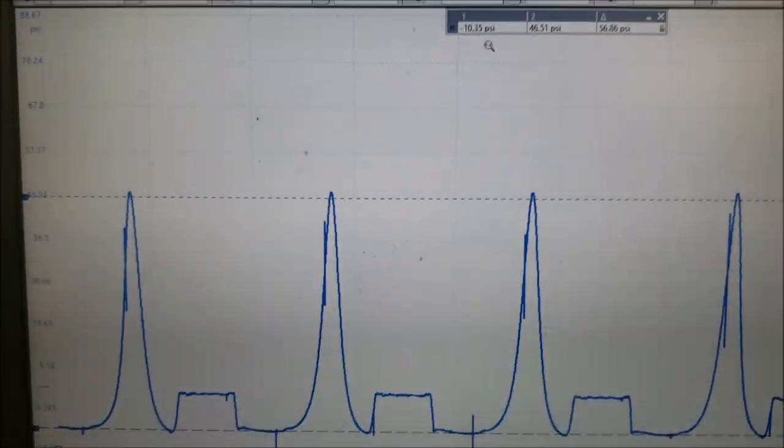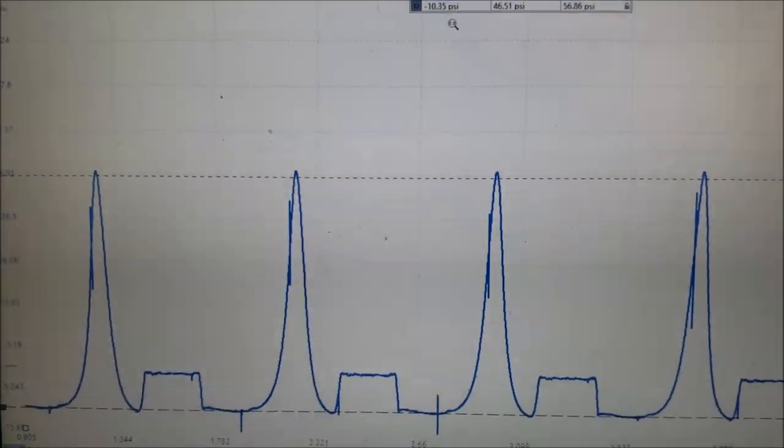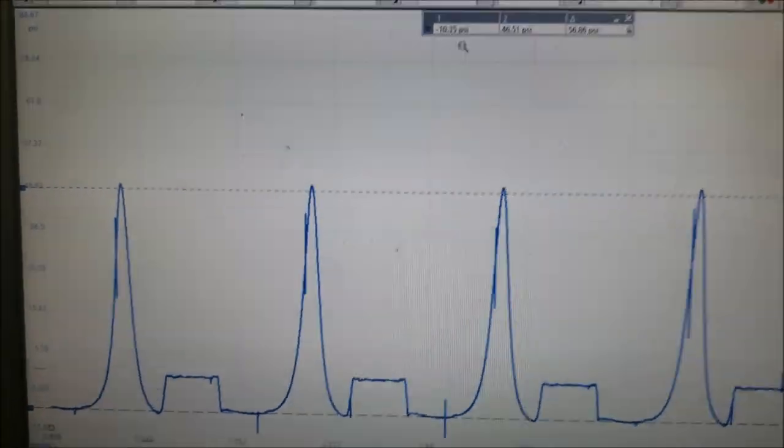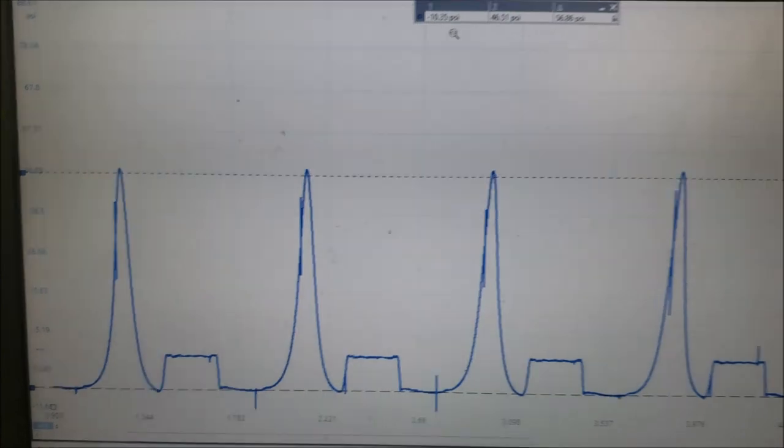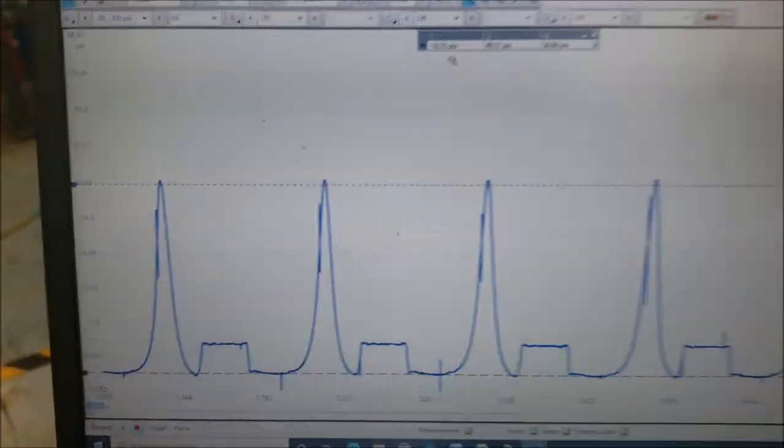So normally a cranking engine should only produce like maybe five inches of mercury, and this is cranking produces 20 inches of mercury. So that in itself points me to a restriction on the intake, and that's probably the reason why we have so low of a compression.